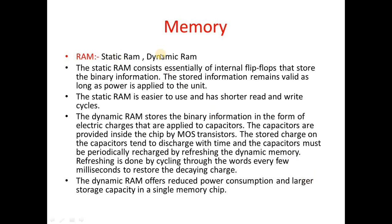RAM has two types: static RAM (SRAM) and dynamic RAM (DRAM). Both are volatile — stored information remains valid only as long as power is applied. SRAM uses flip-flops to store binary information. DRAM stores information using capacitors, giving it reduced power consumption and larger storage capacity per chip (higher density) compared to SRAM. However, SRAM has the advantage of shorter read and write cycles — better speed.